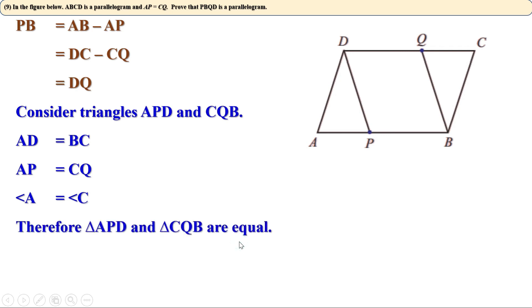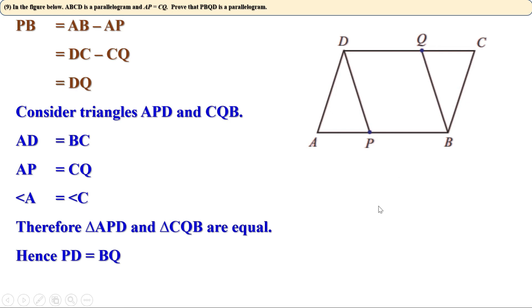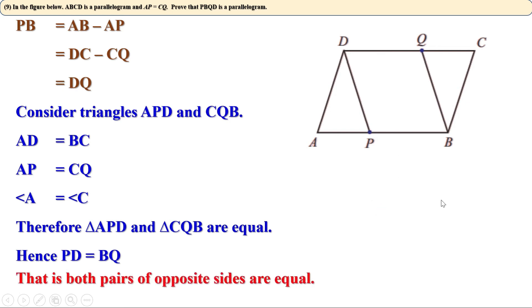Therefore the triangles are congruent. When two triangles are congruent, sides opposite to equal angles are equal. Angle A and angle C are equal, so PD and BQ — the sides opposite to them — are equal. Both pairs of opposite sides of quadrilateral PBQD are equal, so PBQD is a parallelogram.